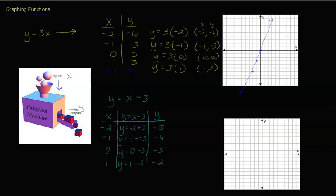Let's go ahead and graph this. Our coordinates are: negative 2 comma negative 5, negative 1 comma negative 4, 0 comma negative 3, and 1 comma negative 2. So we plot negative 2 negative 5, then negative 1 negative 4, then 0 negative 3, then 1 negative 2.